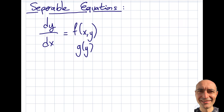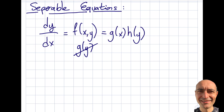Now I'm going to relax the rule a little bit, but still not fully. What I will do is look at cases where I can simply separate this so that f(x, y) can be written as g(x) times h(y). For these kinds of equations, I can move dx to one side, move h(y) to the denominator, and take the integral of both sides.